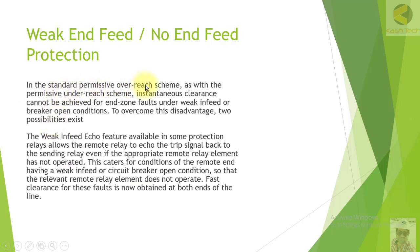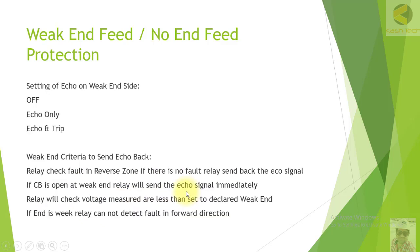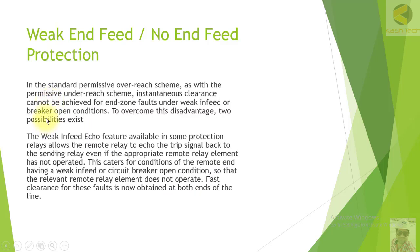In the standard permissive overreach scheme, as with the permissive underreach scheme, instantaneous clearance cannot be achieved for end-zone faults under weak-end feed or breaker-open conditions. To overcome this disadvantage, two possibilities exist. The weak-end feed ECO feature available in some protection relays allows the remote relay to echo the trip signal back to the sending relay even if the appropriate remote relay element has not operated — catering for the condition of the remote end having a weak-end feed or circuit breaker open condition.